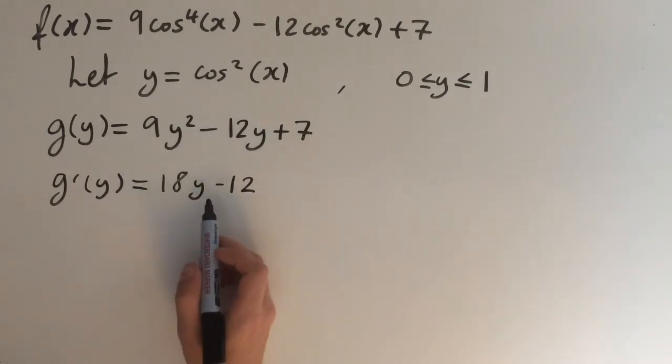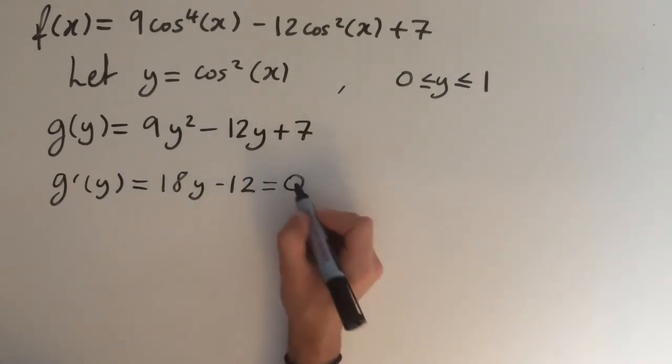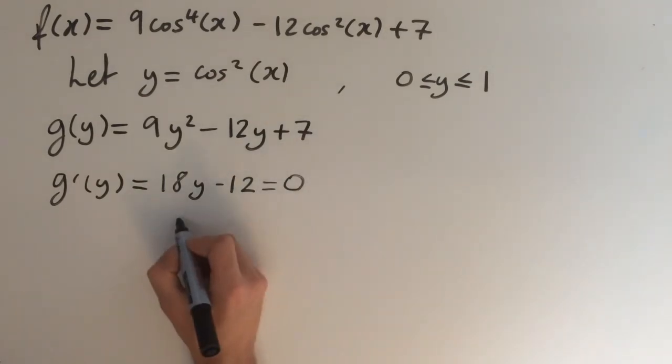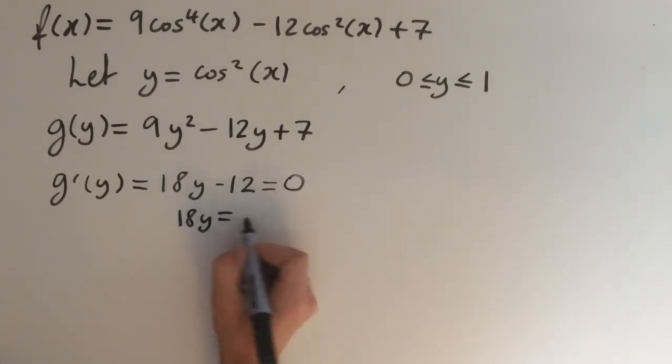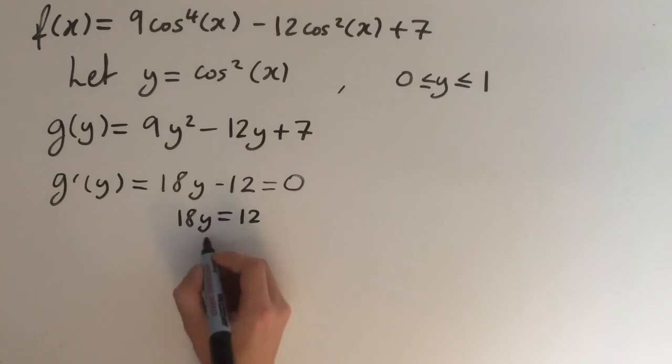And to find its turning point, we need to set this equation equal to 0. So if I take the 12 onto that side, I get 18 y equals 12. And dividing by 18, we get y equals 2 over 3.